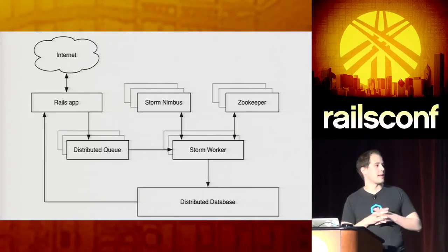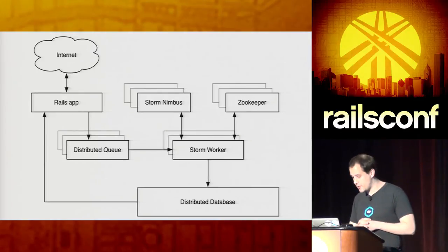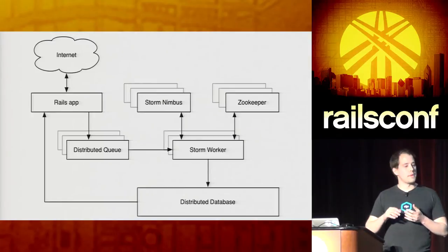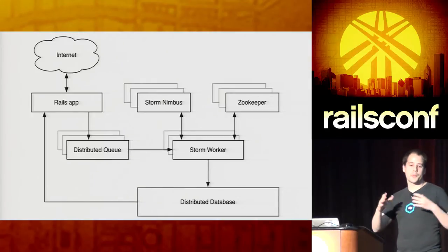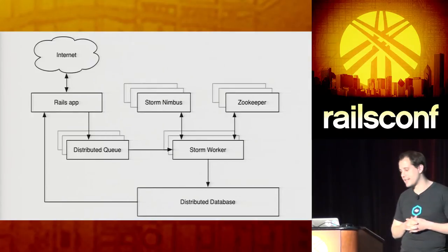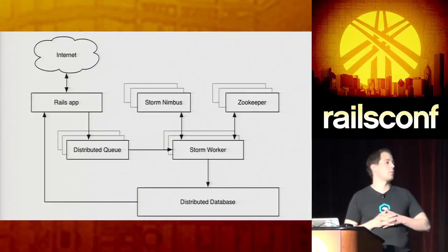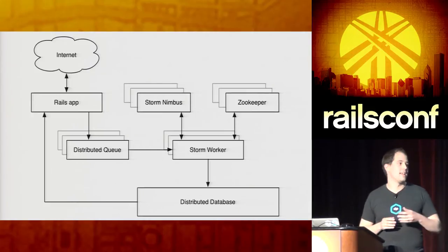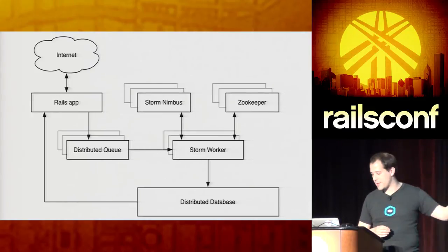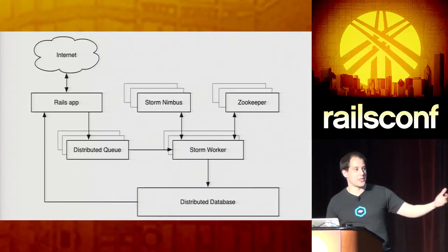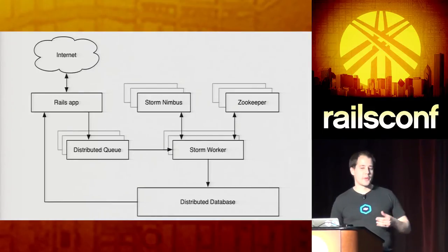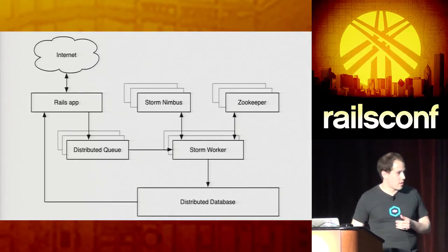You'll end up having to run a ZooKeeper cluster, the Storm Nimbus process somewhere, and there are going to be a number of other Storm coordination processes. Every server is going to have a worker process. And while you're at it, you've gone this far — let's throw in a distributed database and some distributed queues in there too. The main point is there's going to be an operational overhead.